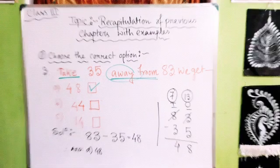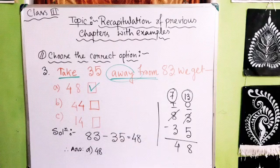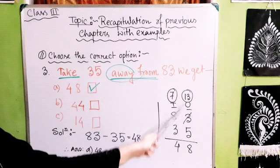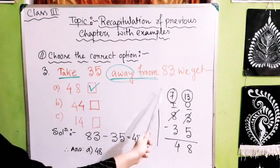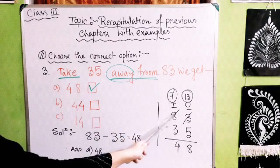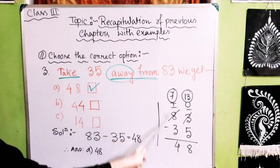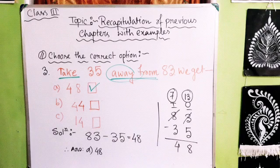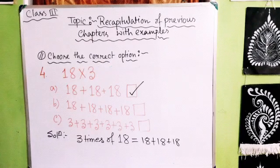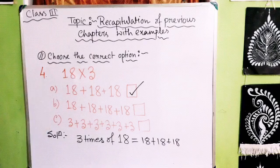Using place values: we can't subtract 5 from 3 in the ones place, so we borrow 1 from the tens place. That gives us 13 minus 5 equals 8. Since we borrowed 1 from the tens place, the tens digit becomes 7, and 7 minus 3 equals 4. So the answer is 48 — Option A.